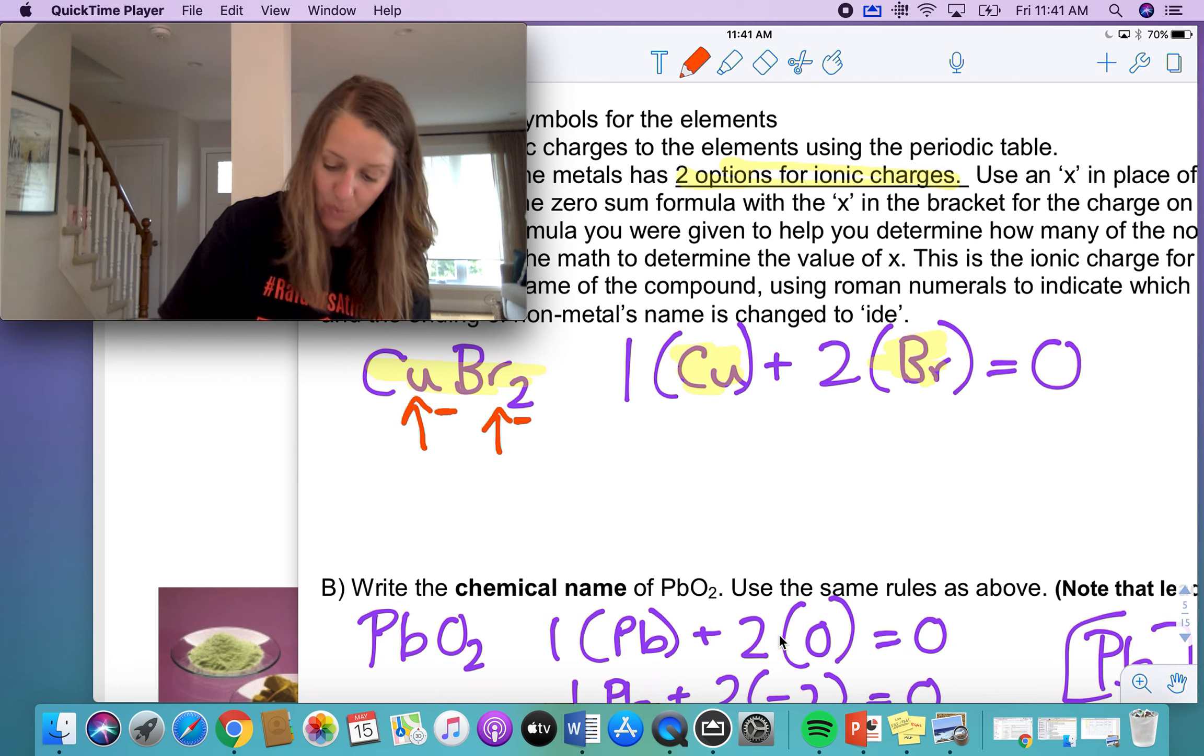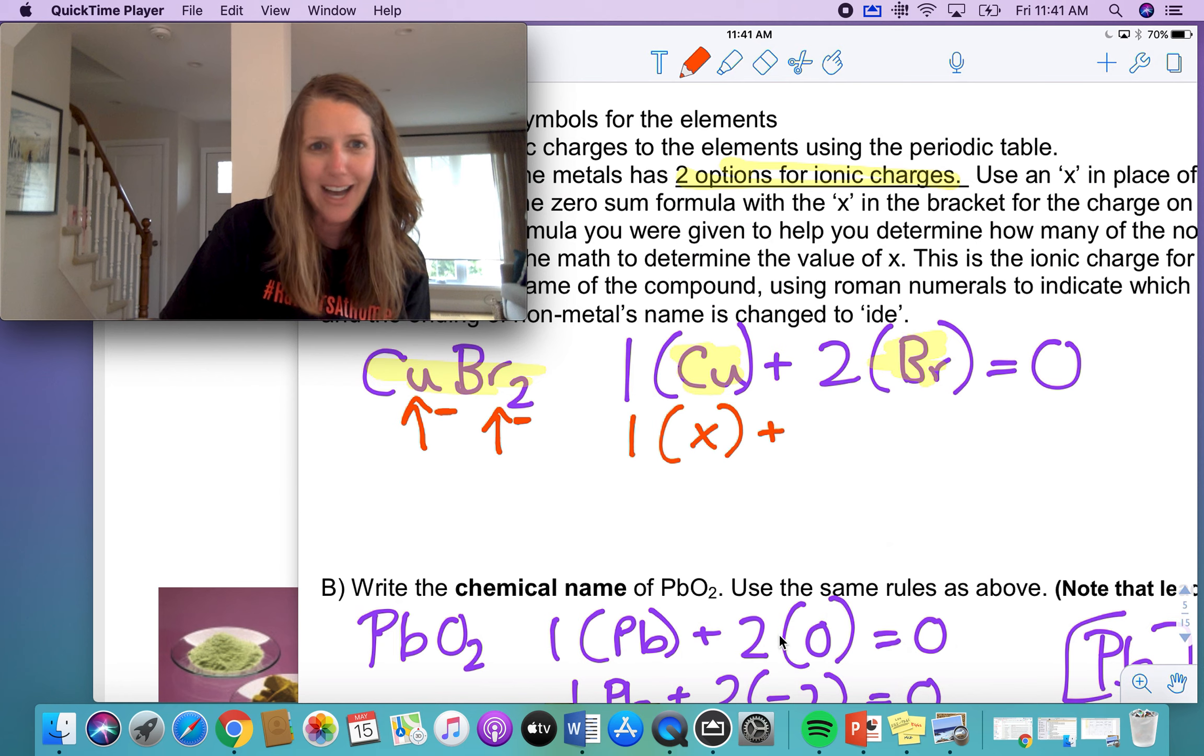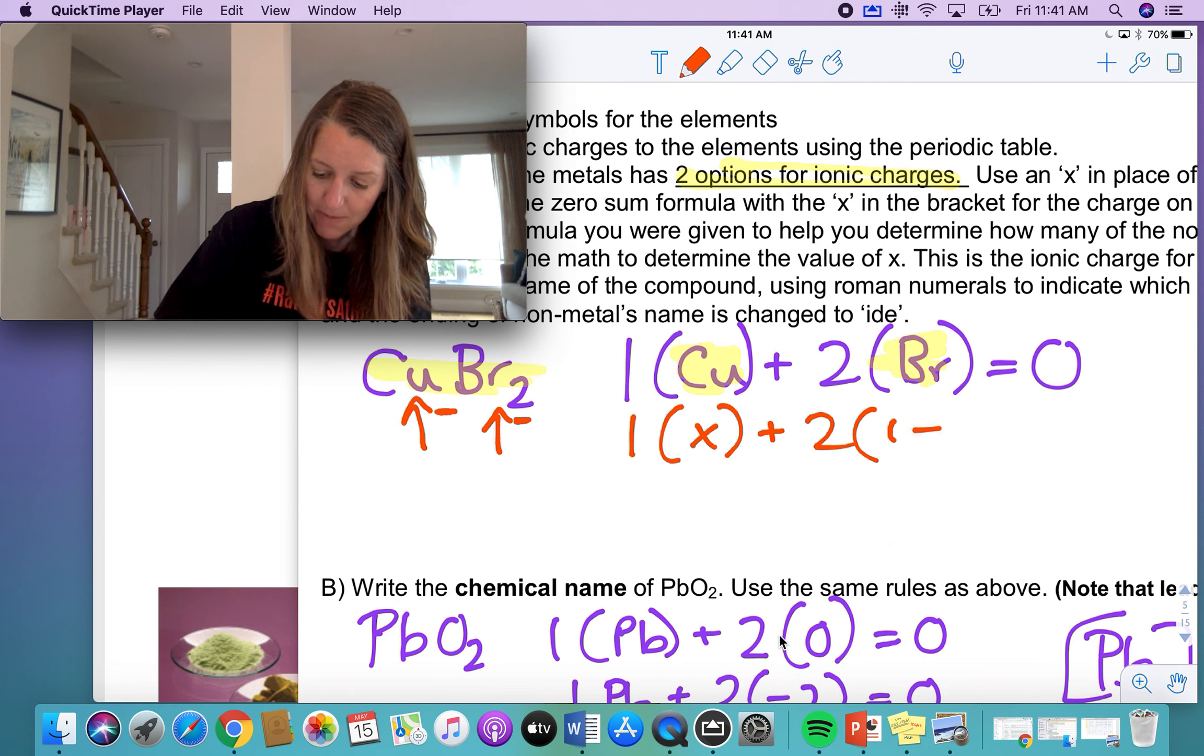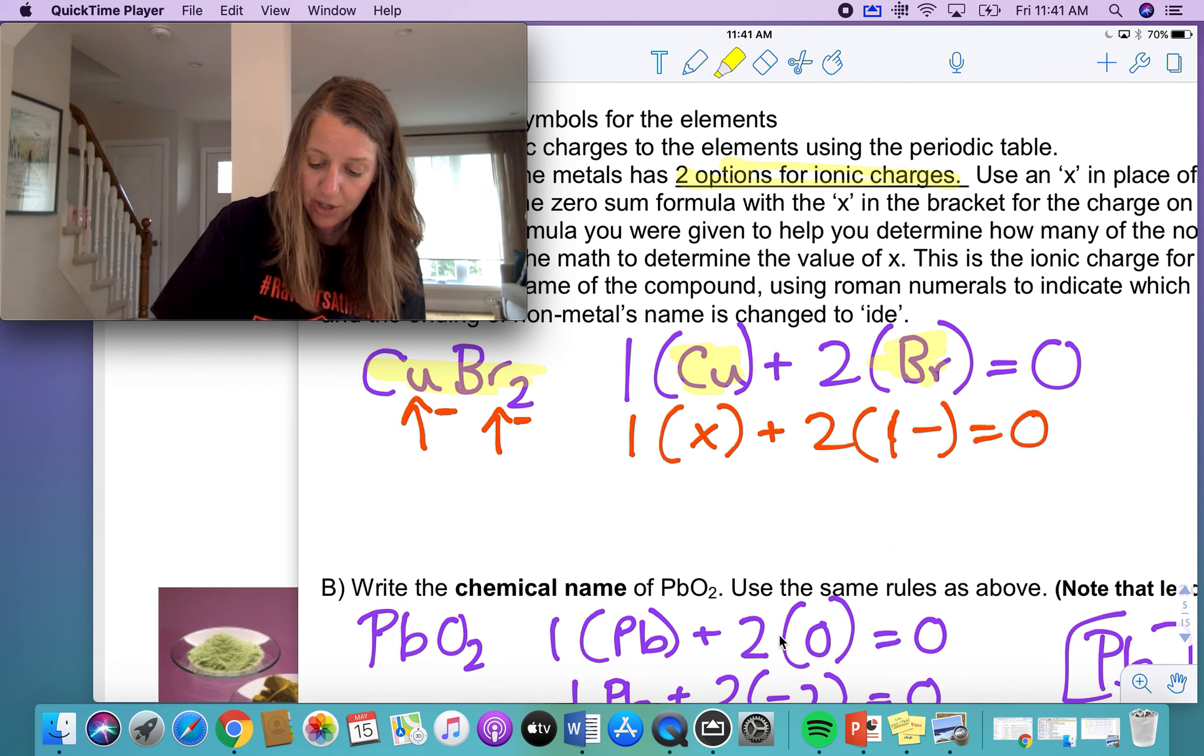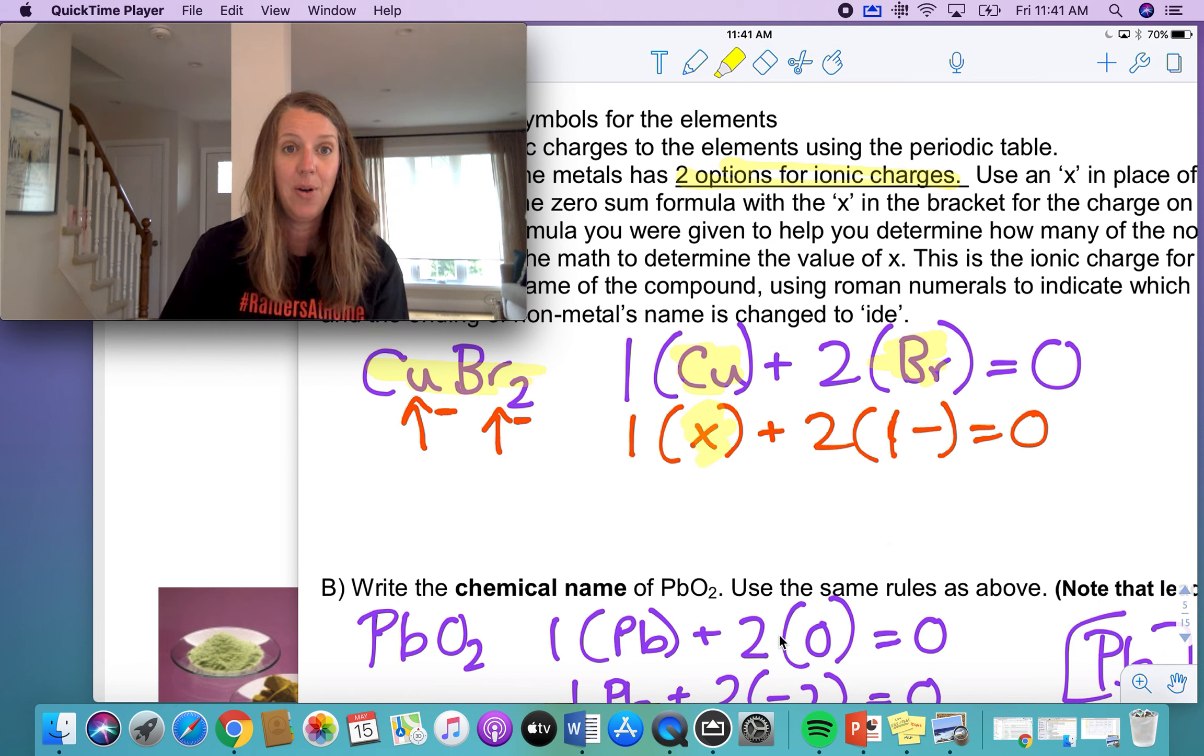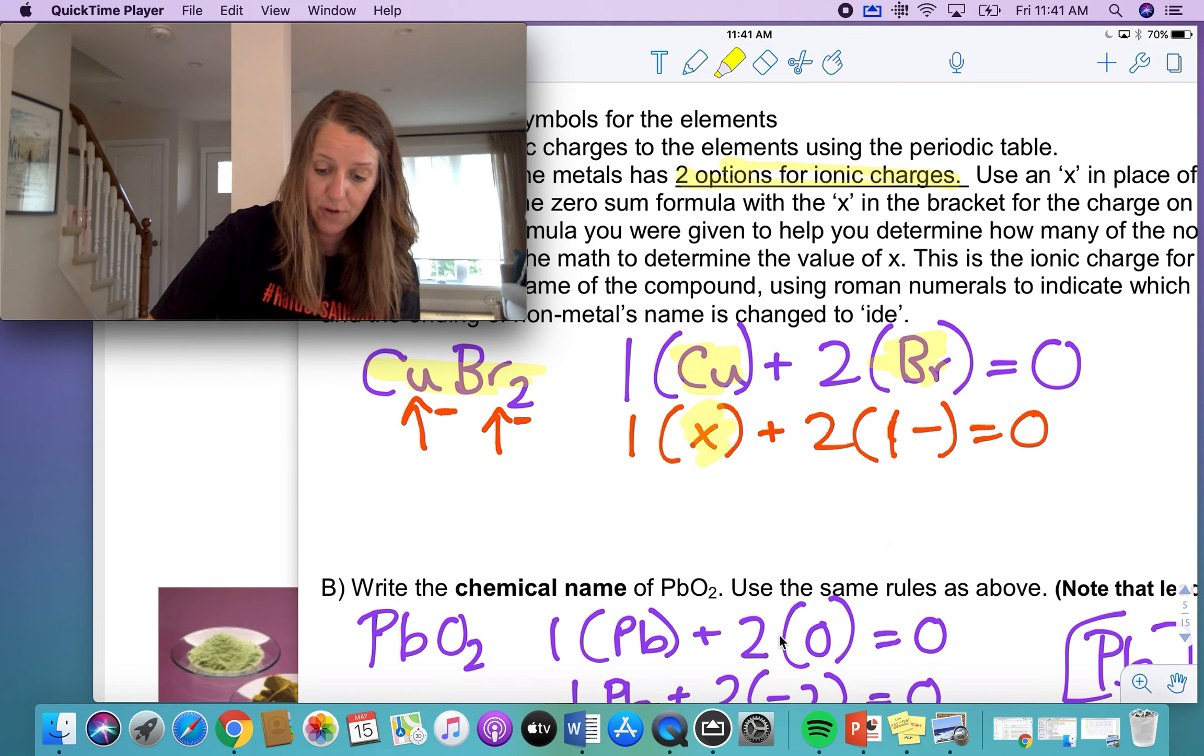So I have one copper and two bromines. So what am I solving for? I put the X here because I don't know what the charge of the copper is. Is it a one plus charge or is it a two plus charge? There are two options, but I do know what the charge of bromine is. It's a one minus charge. Together they have to be zero. So can you figure that out? Does that make sense now that you need to have a two plus charge of copper?